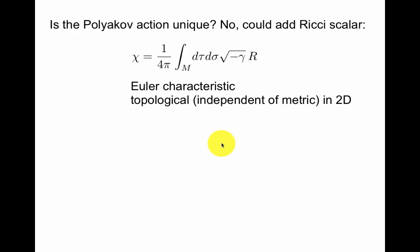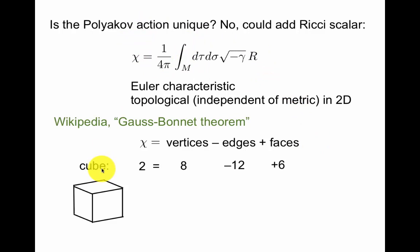As a short bonus question, is the Polyakov action unique? No, we could add the world-sheet Ricci scalar to it. However, this is topological. It doesn't depend on the metric. It doesn't contribute to the equations of motion because it's in two dimensions. It's the Euler characteristic. Now Euler didn't define the Euler characteristic like this. It follows from the Gauss-Bonnet theorem that Euler's definition, which is more like this in topology, as we would call it today, is equivalent to this geometrical definition. For example, cube has Euler characteristic 2. It has 8 vertices, 12 edges, and 6 faces. If you're interested in this, take a look at the definition of Euler characteristic and the Gauss-Bonnet theorem.